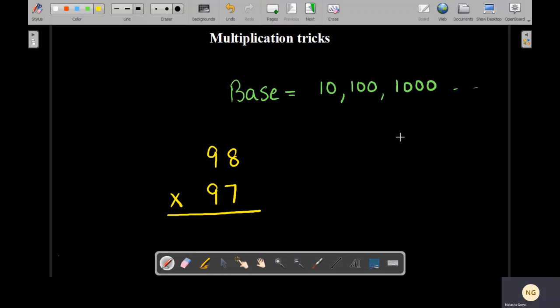Now the second step is we are going to subtract. 98 minus 100 will give you minus 2 and 97 minus 100 will give you minus 3. Now you will write minus 2 and minus 3 over here.